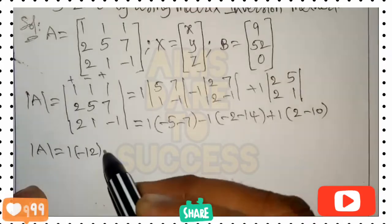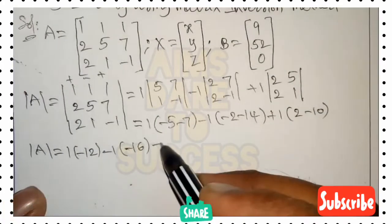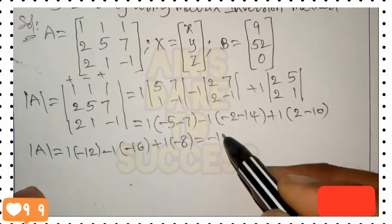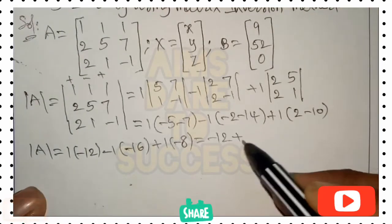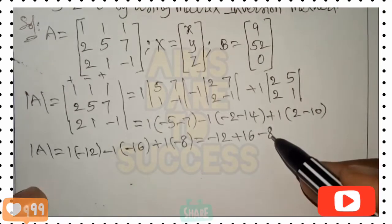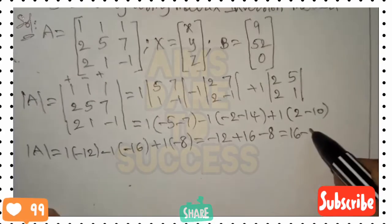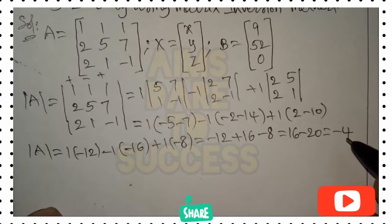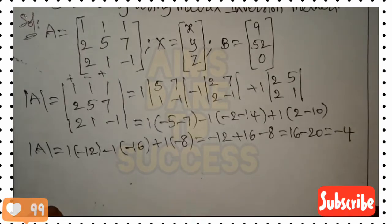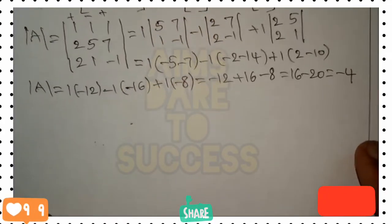Simplifying: 1 into (-5 - 7) = -12, minus 1 into (-2 - 14) = -16, plus 1 into (2 - 10) = -8. So det(A) = -12 + 16 - 8 = -4, which is not equal to zero, so we can continue with the matrix inversion method.